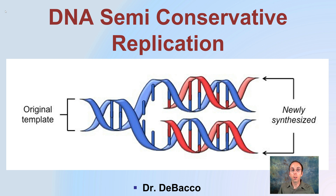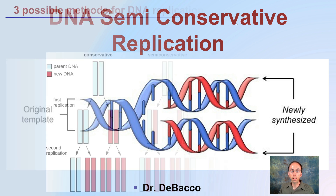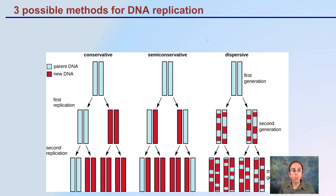DNA replication occurs in what we call a semi-conservative method. We're going to explore the details of what this actually means and what's actually going on in the cells when DNA is replicated. There are three possible methods for replication: conservative, semi-conservative, and disruptive.